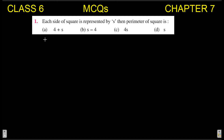First MCQ: each side of a square is represented by s, then the perimeter of the square is — with four options given, one of which is the correct answer. We need to mark the correct option. So first, let's find the correct answer by solving this question.